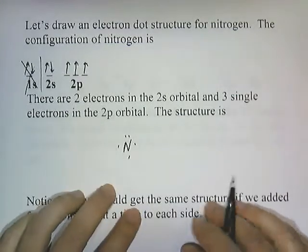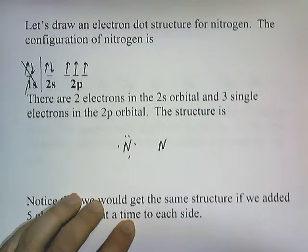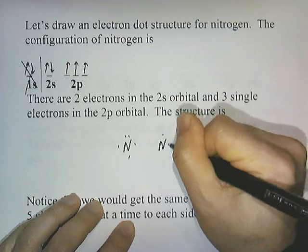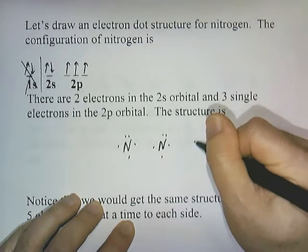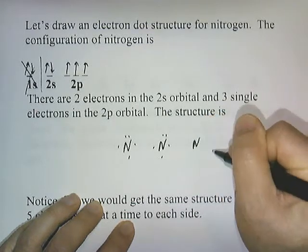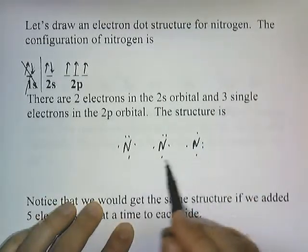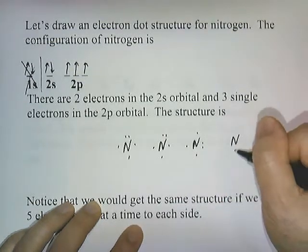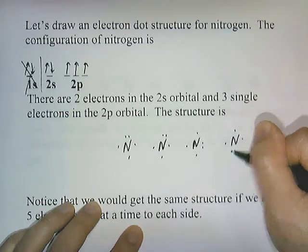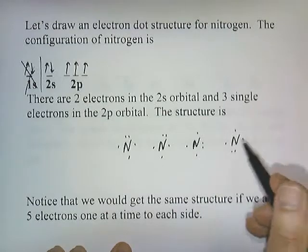Another way to do it is to add the electrons one at a time clockwise: five electrons — one, two, three, four, five — you get the same structure. It doesn't matter what side you start with. I could have started on a different side and gone one, two, three, four, five — that's also correct. These are all correct answers. You get the same structure if you add five electrons one at a time to each side, and it doesn't matter what side you start with.